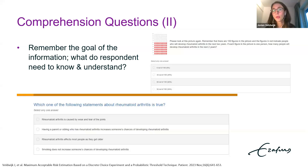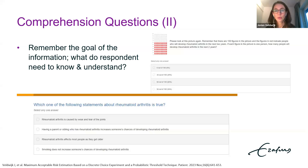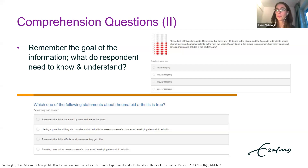Evaluating performance on comprehension questions together with other indicators — such as completion time, flatlining, random choice, or dominant choice — can be very useful to identify individuals who did not engage with your survey. Although there's no clear decision rule or threshold for what is considered acceptable or not, researchers might beforehand design their own decision rule and decide to exclude particular respondents based on their analysis or sensitivity analysis.